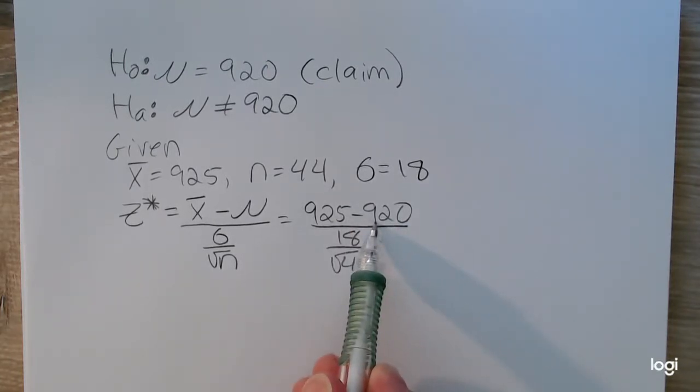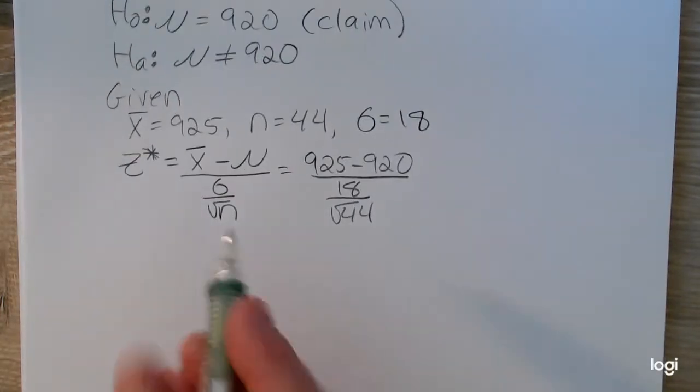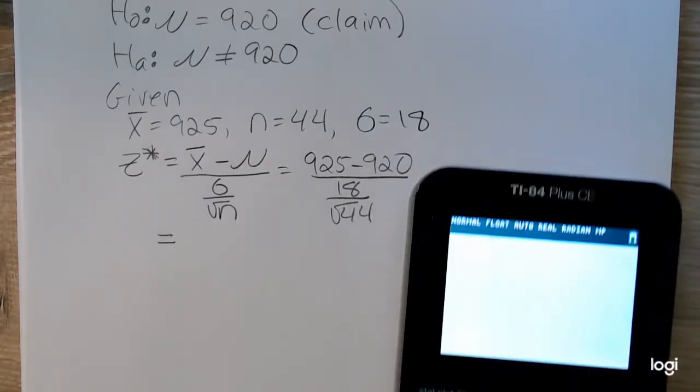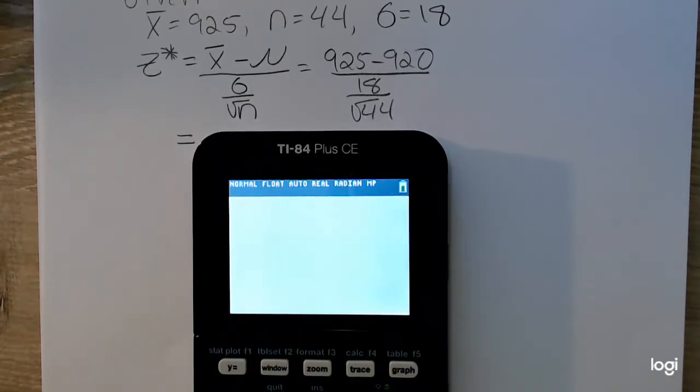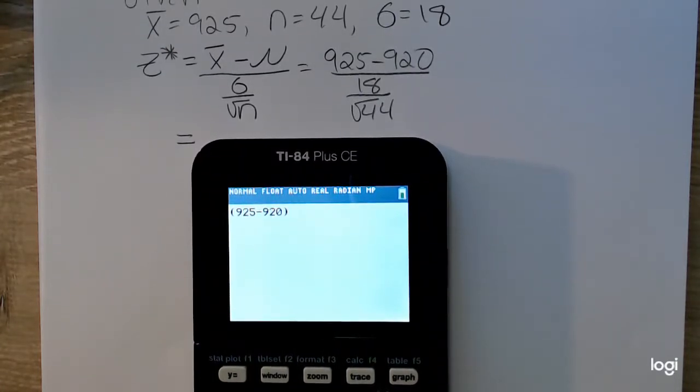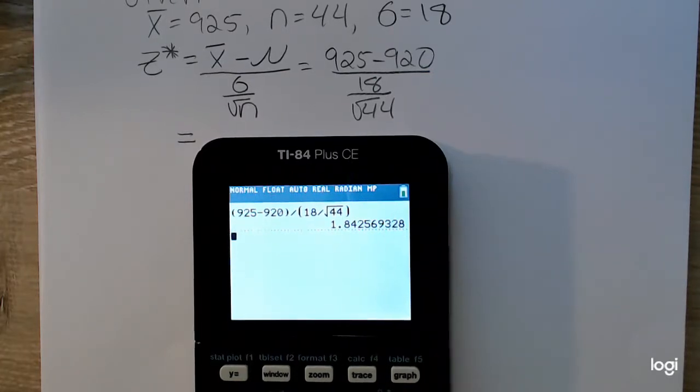We do have a difference between what we observe and what is claimed, but we don't know if this difference is enough to warrant rejecting the null. Putting this information into the calculator, and I strongly suggest using parentheses around the numerator and the denominator, just so the calculator observes the correct order of operations. Divided by 18 divided by square root 44. Rounding to two decimal places, I get a z-score of 1.84.